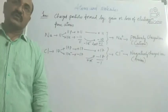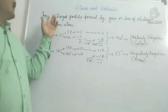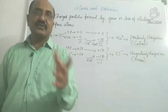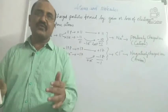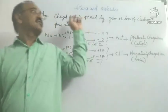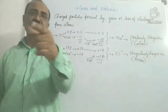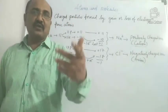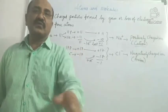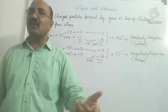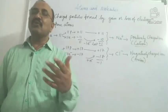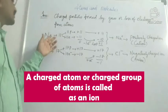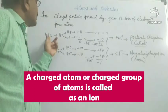Here we find what ions are. As we have seen in the earlier explanation, ions are formed due to transfer of electrons. Ions are charged atoms. These are particles formed by atoms when they either gain electrons or lose electrons. We'll see by example. Let us look at a sodium atom. Its atomic number is 11. It has 11 protons and 11 electrons in the ground state.